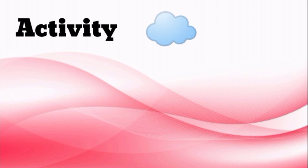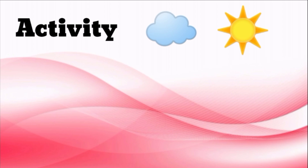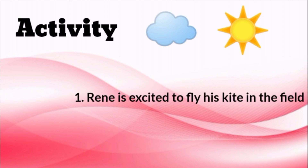After discussing our lesson for today, let us have our activity. All you have to do is draw a cloud if the activity happens during the rainy season, and a sun if it happens during the dry season. Get a piece of paper and a pencil. I will give you 5 seconds for every question. Are you ready? Let us begin. First question: Rene is excited to fly his kite in the field.